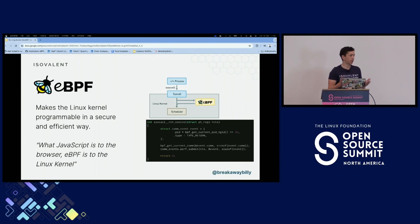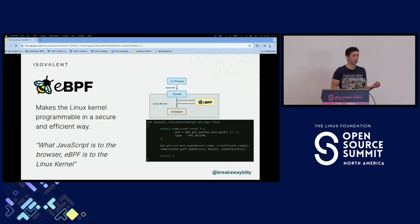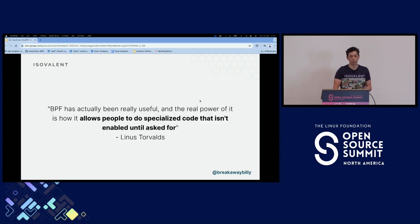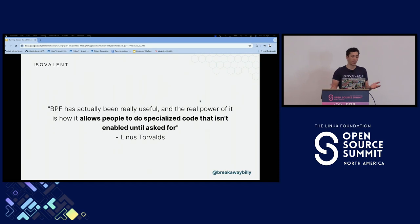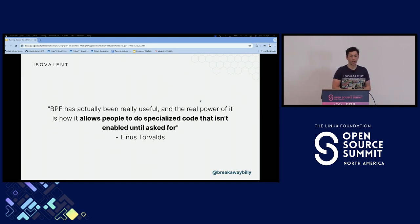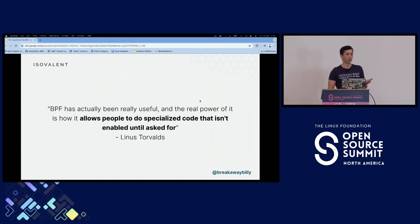That's very similar to what eBPF is doing for the Linux kernel now. It's able to add new functionality on the fly, to do additional things based on user input. And Linus — if you saw him at the keynote yesterday — said eBPF has actually been really useful, and the real power of it is how it allows people to do specialized code that isn't enabled until it's asked for. Adding new functionality on the fly, but only when you need it.